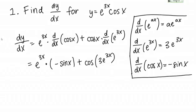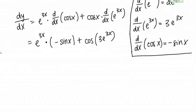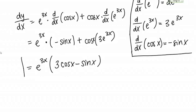Now I can simplify this a little bit, because both terms have a factor of e to the 3x, so I can factor that out and bring it out front. That gives me e to the 3x times the quantity — and factoring the e to the 3x out front leaves me with 3 cosine x minus sine x. This is my derivative.